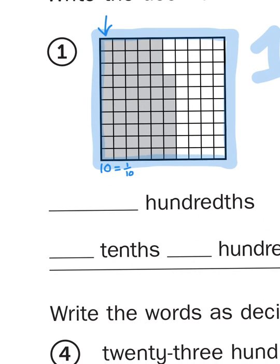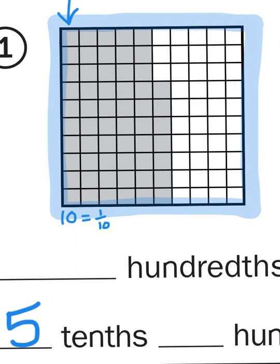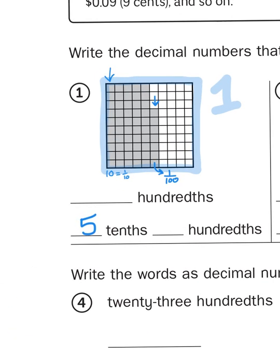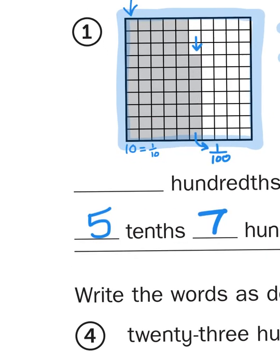I can see there are five columns, so there are five tenths shaded in. Along with that, there are some loose boxes that don't make up a full tenth, and those would be considered hundredths. Each individual box is considered one one-hundredth. There are seven more boxes shaded in, so seven hundredths. When I have five tenths and seven hundredths, that gives me a total of fifty-seven hundredths.